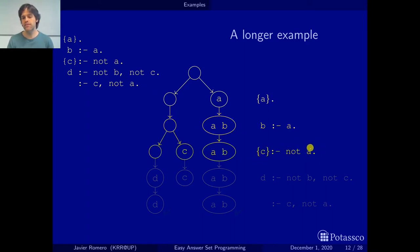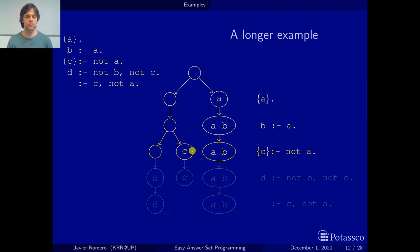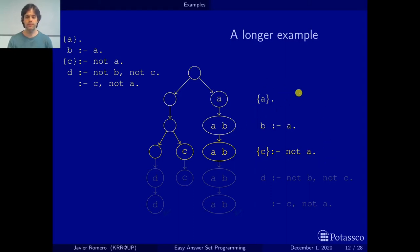Applying the choice rule tells us: if A is not in the set, we may add C to our answer set. Here we have A, so nothing happens. But here A is not in the set, so we can choose to add C. Then we have this new option, and we know these three sets are the answer sets of this program. We could already apply the constraint, because it depends on C and A, and all the rules for C and A have been applied.